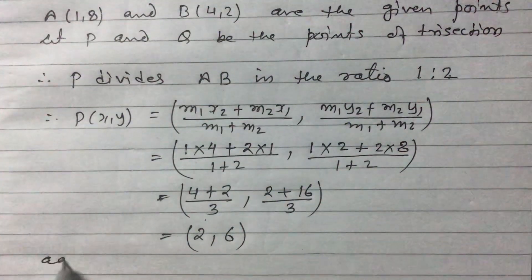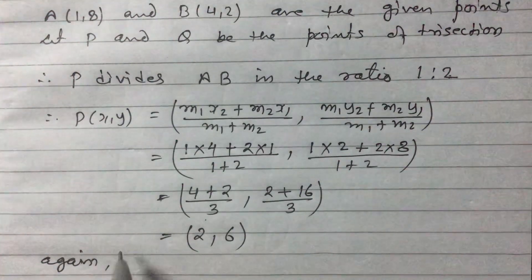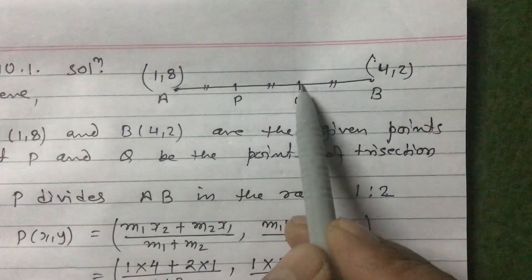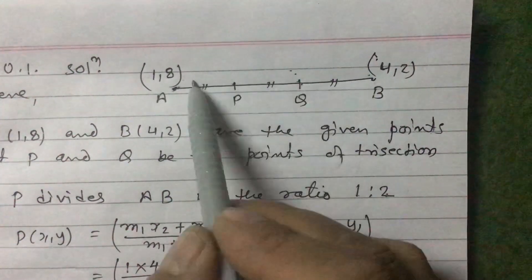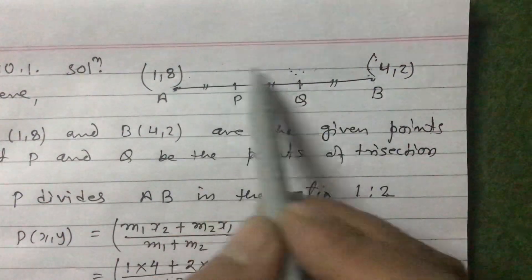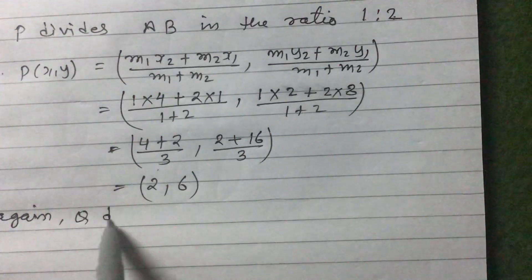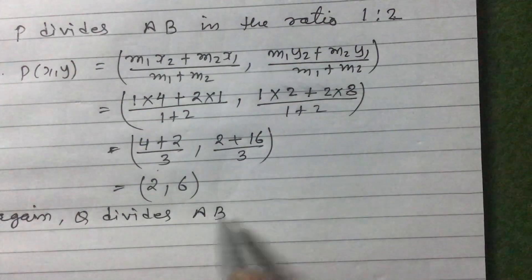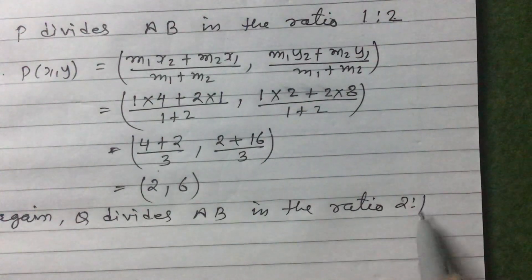Similarly, now it's the turn of Q. Q divides AB in the ratio 2:1, because from A to Q is 2 parts and Q to B is 1 part. So the ratio is 2:1. Q divides AB in the ratio 2:1.